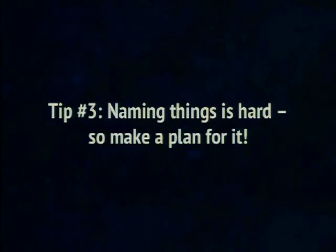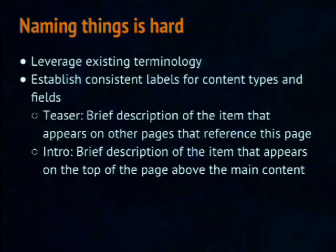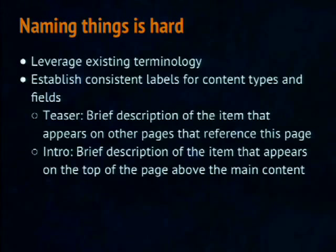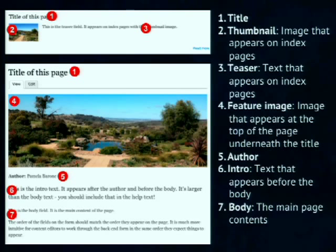The next tip is about naming things — we all know naming things is hard, so it's really important to make a plan. There's often existing terminology that a team uses, and if you deviate from that it can be confusing. I did a training session where I used the word 'teaser' all over the place because that's what we called it throughout the build, and at the end someone raised their hand and asked 'what's a teaser?' A good way to handle this: when you're doing your IA and designs, label each field as it appears on the page and define it. Ask the client if they have a name for it already, then distribute this to the developers when setting up content types — otherwise they'll each come up with their own name and there will be no consistency.